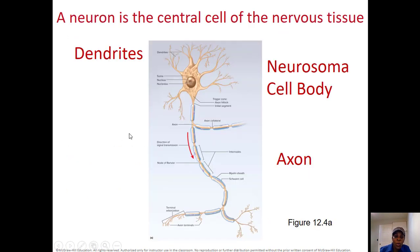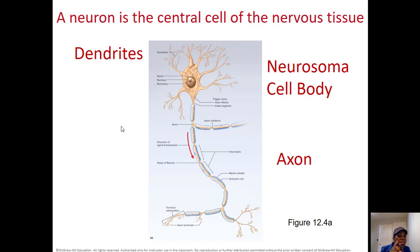What is the neuron? It is the central cell of the nervous tissue. Remember, we have four types of tissue: epithelial, connective, muscular, and nervous tissue. The nerve tissue is a type of tissue made of cells and things between the cells, and the basic unit of function of the nervous tissue is the neuron, supported by other cells.